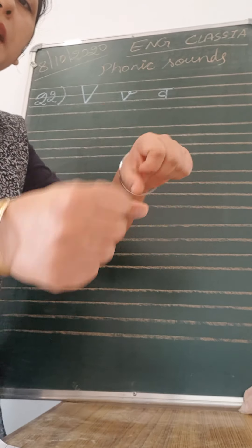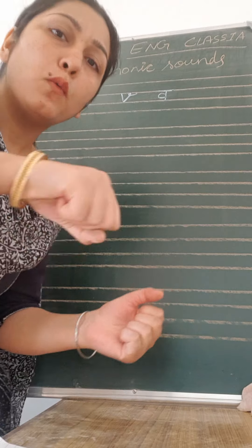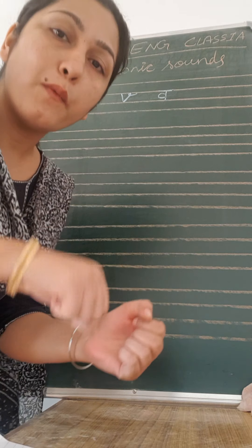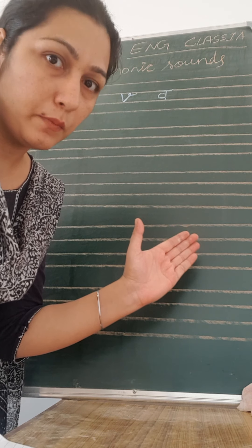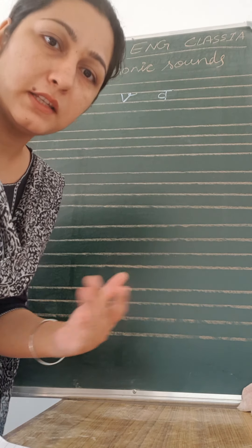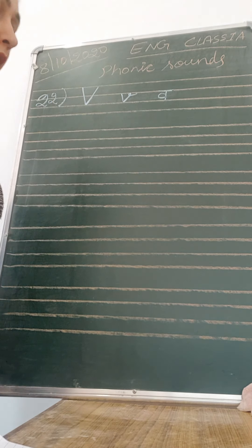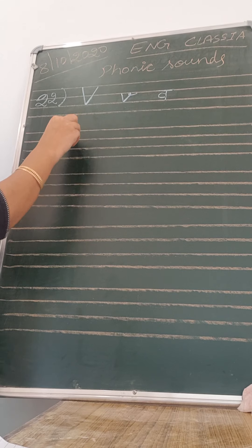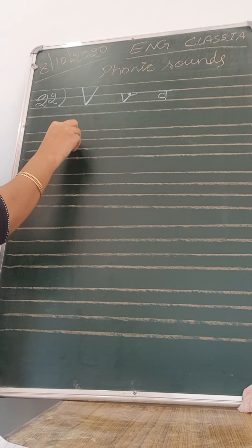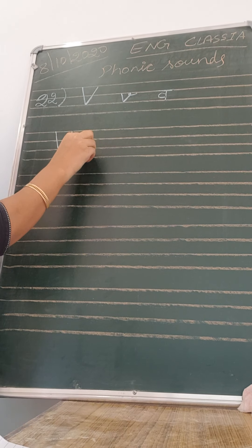Drive the van down the village — wah, wah, wah. Okay, now let's write some words related to letter V. The first letter V word is: V is for van — wah, wah, wah.